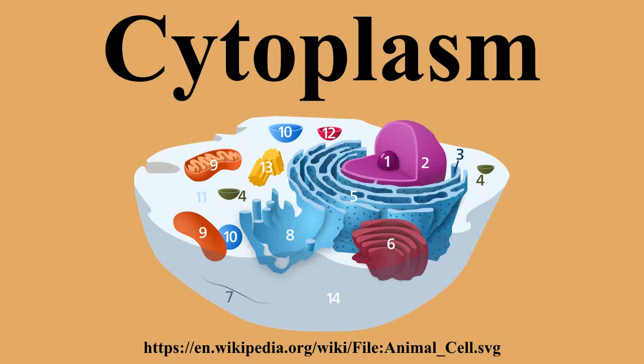The term cytoplasm was introduced by Rudolf von Kölliker in 1863, originally as a synonym for protoplasm, but later it came to mean the cell substance and organelles outside the nucleus. There has been certain disagreement on the definition of cytoplasm, as some authors prefer to exclude from it some organelles, especially the vacuoles and sometimes the plastids.